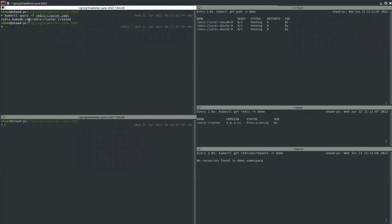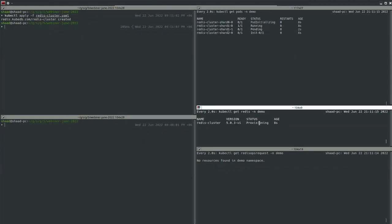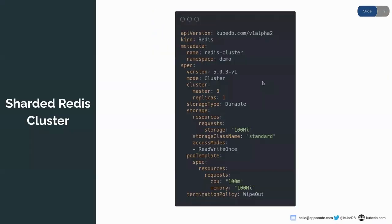I've deployed the YAML and this Redis cluster is in provisioning state — pods are being created. Let's look at the YAML. The API version is kubedb.com/v1alpha2, kind is Redis. In the metadata we have name 'redis-cluster' and namespace 'demo'. In the spec, the version is 5.0.3-v1 — KubeDB uses the Redis 5.0.3 image underneath — and the mode is cluster.